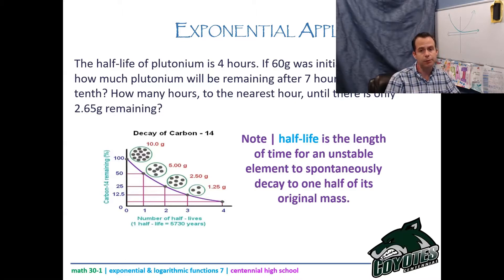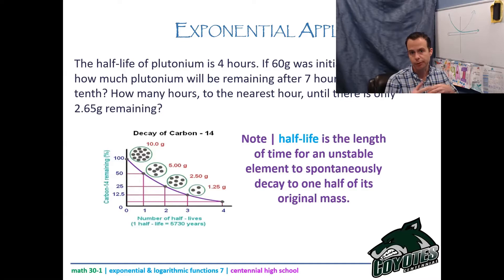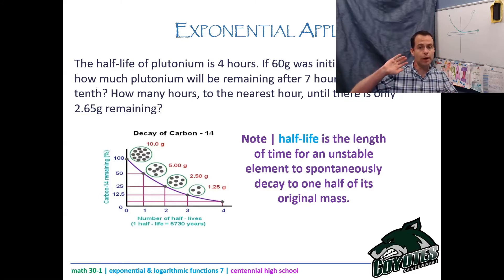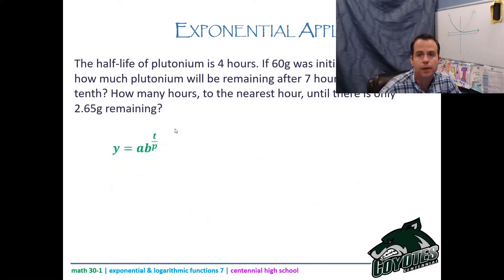If you've studied dinosaurs, you'll have heard about carbon dating — that's where this concept comes from. They find a fossil, and knowing that the half-life of carbon is 5,730 years, they figure out how much carbon is left in the bone and backtrack to determine when it would have been 100%.